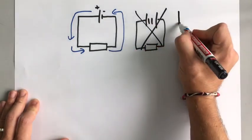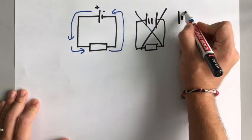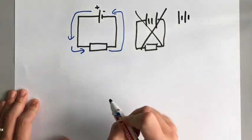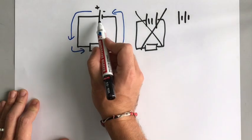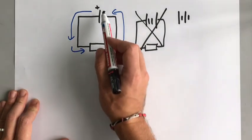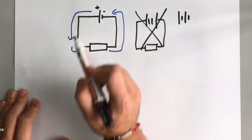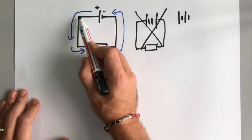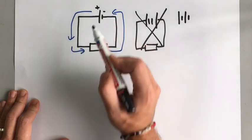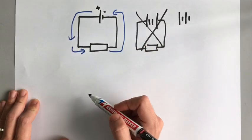A battery is more than one cell — so that is a battery, and that is a cell. Remember the long line is the positive, and the current goes from positive to negative.